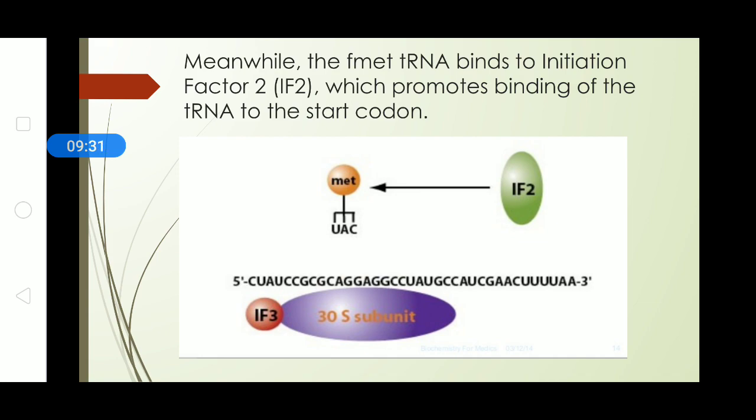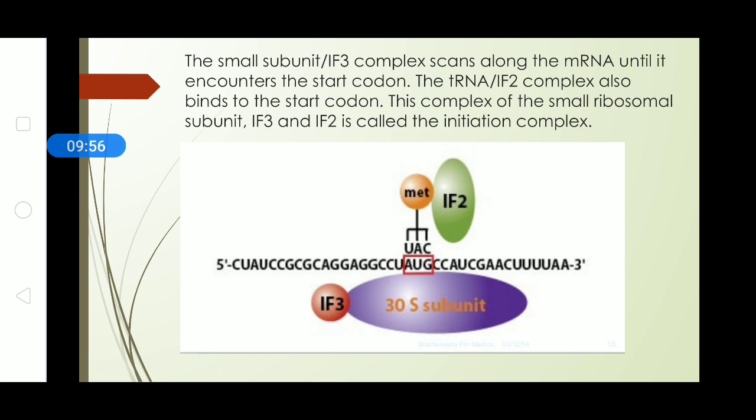As soon as the initiation subunit comes and bind there, what happens is, you can see in the above part of the diagram IF2 that is initiation factor 2 it binds with the fMet tRNA. fMet tRNA refers to a tRNA which is methionine in its first codon binding site. They combine together comes and attaches with the 30S subunit process where you can see AUG that is methionine is binded with UAC that is the F methionine subunit or amino acid is brought by the tRNA and they bind together.